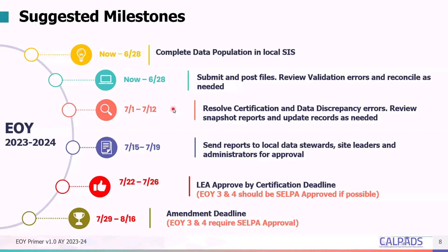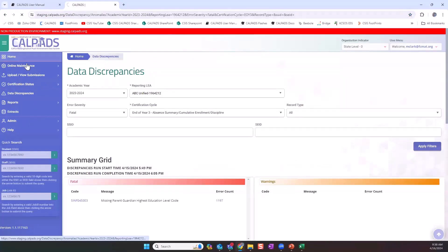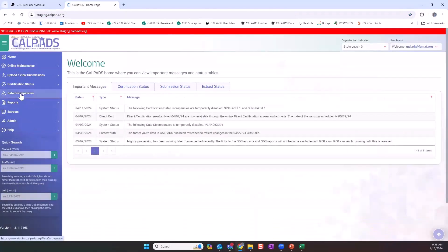Error-free by July 12th is a milestone that CSIS and the CDE will be particularly on the lookout for this EOY, and an inability to resolve all errors by July 12th may result in an at-risk status, triggering communications and support from CSIS and the CDE to LEA coordinators and leadership. If you'd like to get a jump start on your errors now, you are able to navigate to the data discrepancies page in CALPADS. You don't need to wait for the snapshot or wait to begin submitting records to see your existing data discrepancies. Inside of CALPADS, using the left-hand navigation menu, simply click data discrepancies.